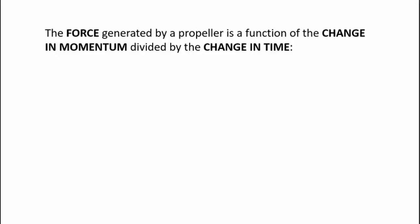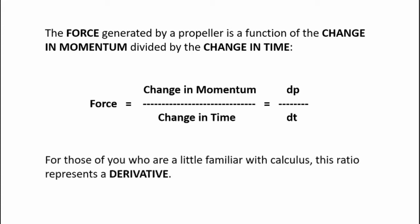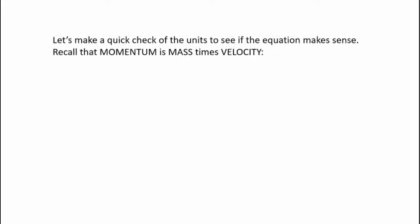Now the force generated by propeller is a function of the change in momentum divided by the change in time. In equation form we have force is equal to change of momentum divided by change in time. Now engineers use p to denote momentum. So we get dp which is a change in momentum divided by dt, the change in time. Now for those of you who are a little familiar with calculus, this ratio represents a derivative.